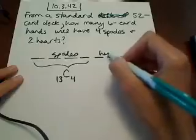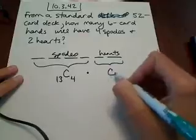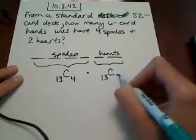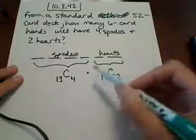And then we want the last two to be hearts, and we also have 13 hearts in a deck. So this would be a combination of 13 things taken two at a time, and we're going to use the basic counting law to count these in this situation.